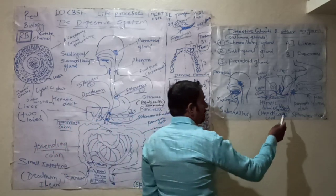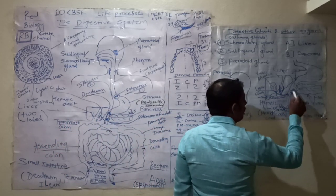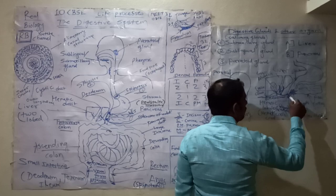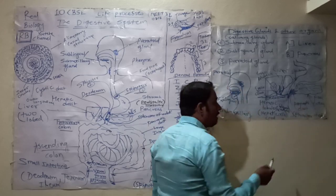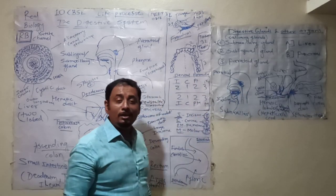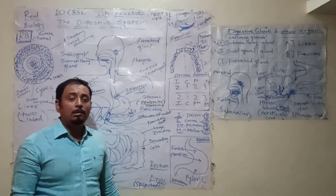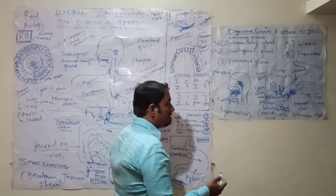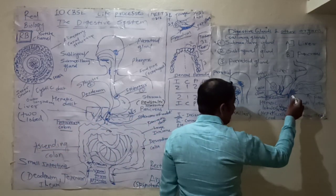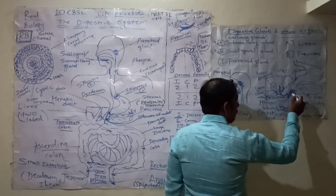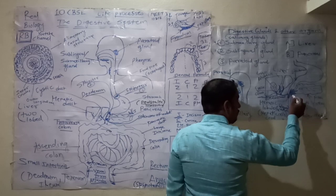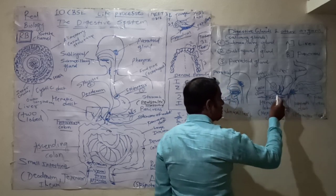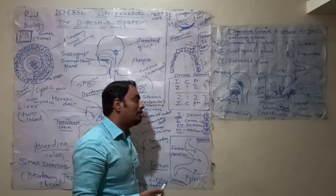These enter into the duodenum part of the small intestine with the help of a controlling muscle known as the sphincter of Oddi — a specialized sphincter. Then, due to the activity of pancreatic juice and the enzymes present, further digestion occurs.